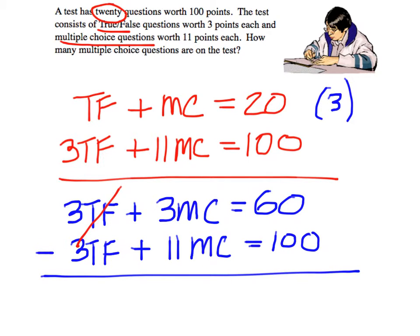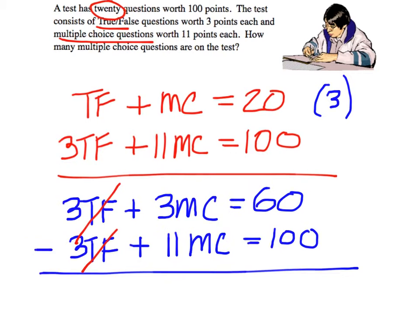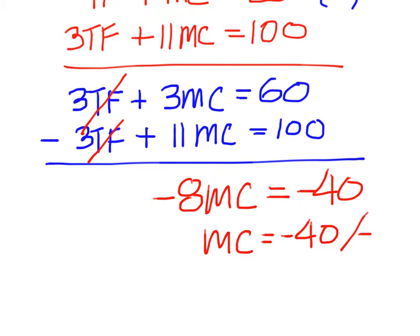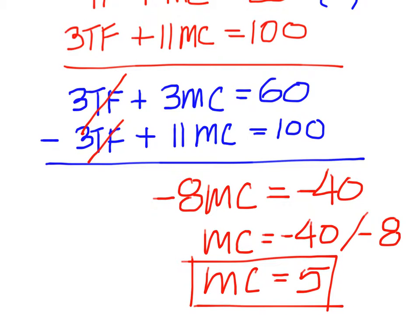Subtract and cancel out the true/false. 3 minus 11 is a negative 8 multiple choice. 60 minus 100 is negative 40. So your multiple choice is negative 40 divided by negative 8, which would be 5. I have 5 multiple choice.